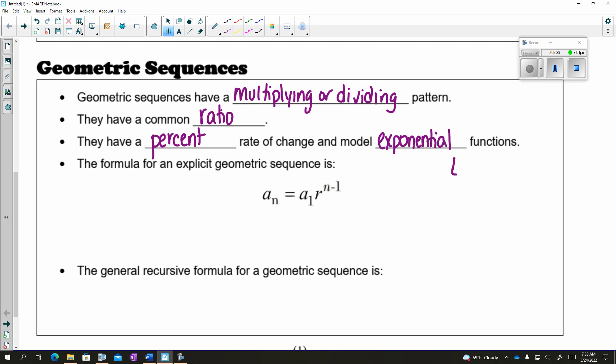So for example, something like 3, 6, 12, 24, and so on. Once again, your formula for an explicit geometric sequence is on the reference sheet, so you don't need to memorize it. A1, still your first term, just like before.